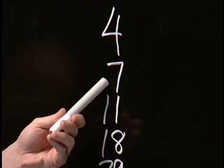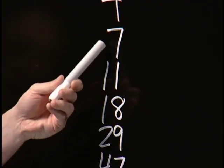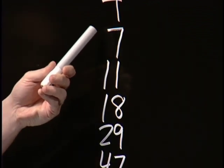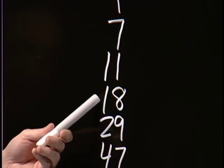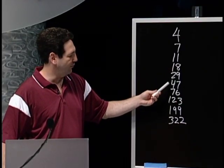So if you have numbers four and seven, you would add them up. Four plus seven is eleven. Then you keep on taking the bottom two numbers. Seven plus eleven is eighteen. Eleven plus eighteen is twenty-nine. Eighteen plus twenty-nine is forty-seven.